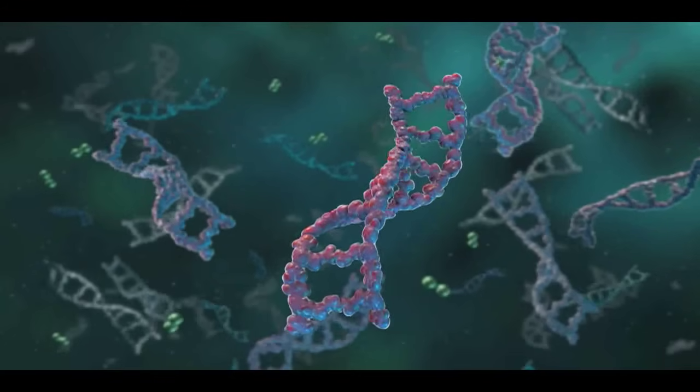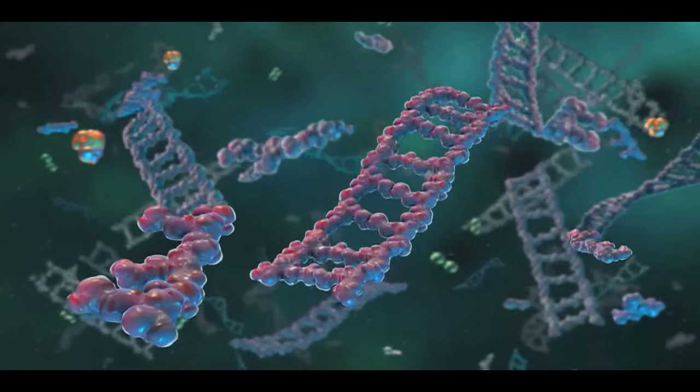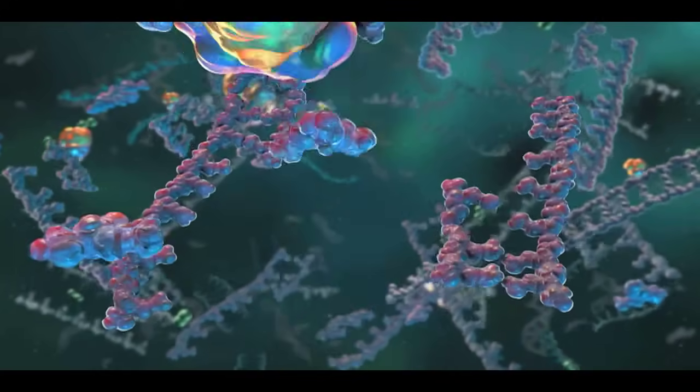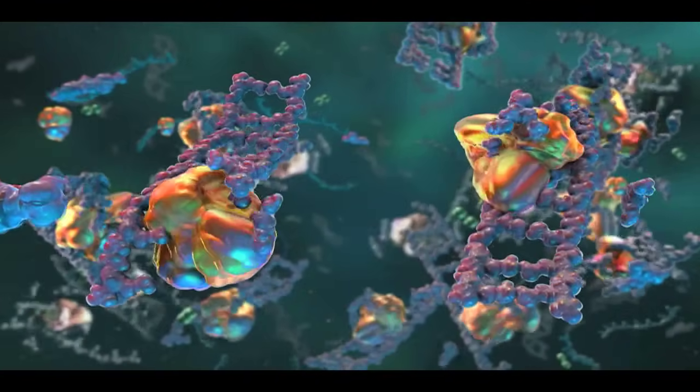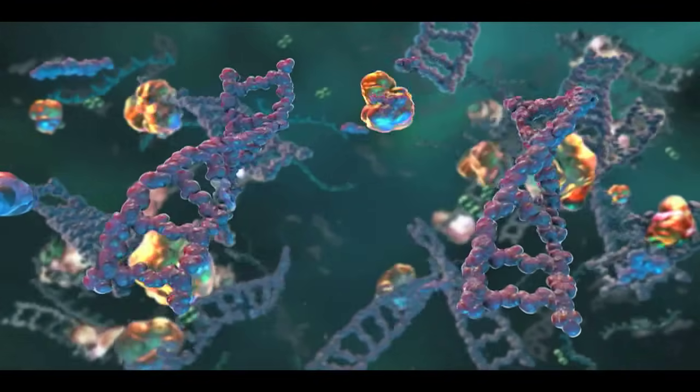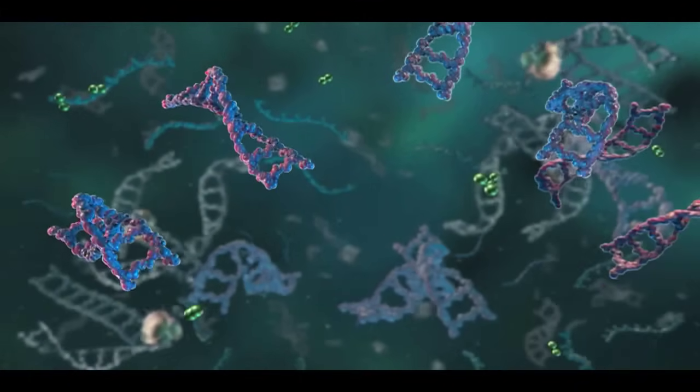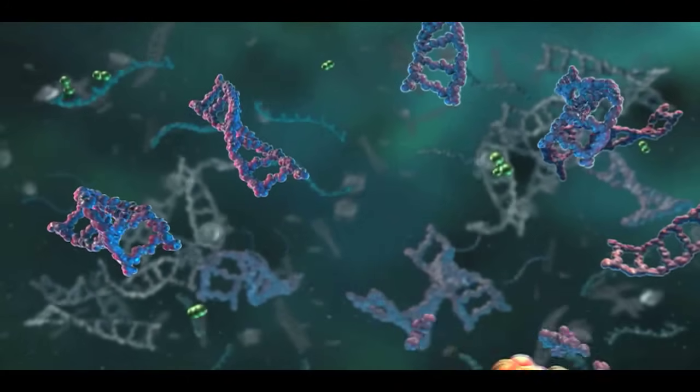Each well of this array is pre-spotted with one pair of second stage PCR primers. These second stage PCR primers are designed to amplify sequences contained within the products from the first stage PCR. This eliminates non-specific products associated with traditional multiplex PCR, because the second stage primers specifically amplify only target DNA.